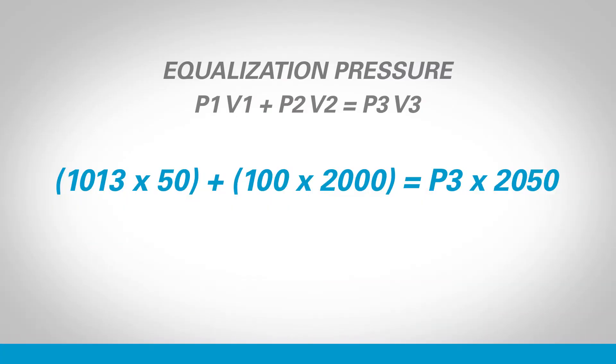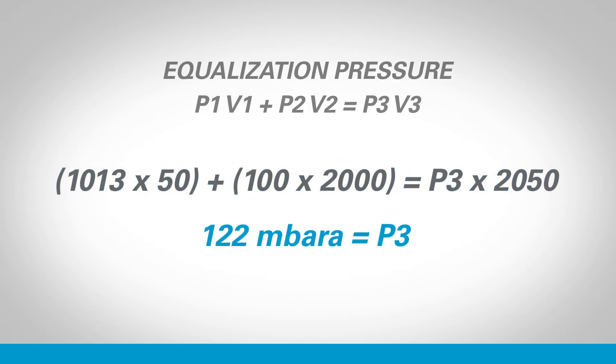So if our process chamber is 50 litres vented to atmosphere and the vacuum tank is 2,000 litres held at 100 millibar absolute, we can very quickly calculate what the equalization pressure will be: 1,013 times 50, plus 100 times 2,000, equals the total pressure multiplied by 2,050. That gives an equalization pressure of 122 millibar absolute.